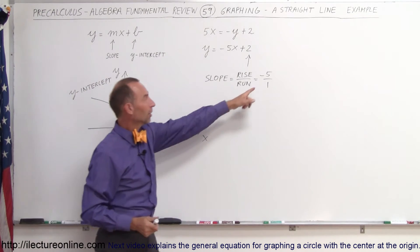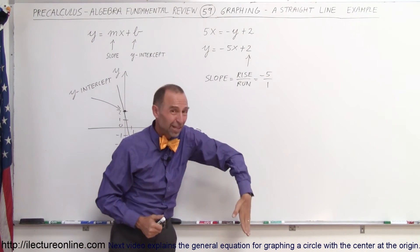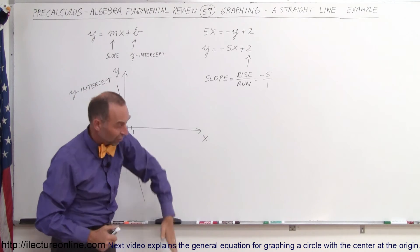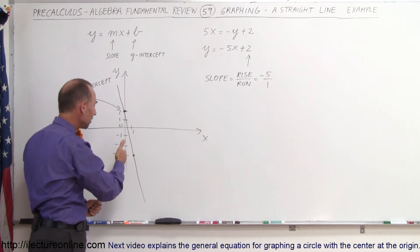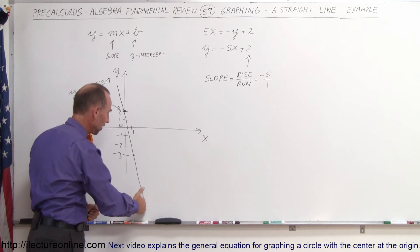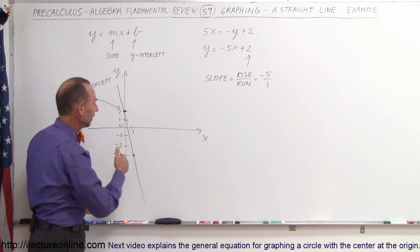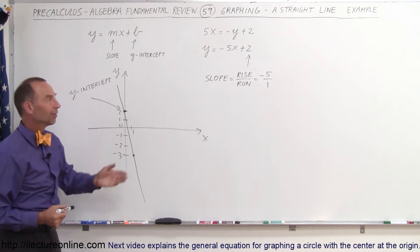Notice the number on the top is fairly large, that means it's a steep slope. Negative means it's sloping downward, and so you can see that this represents a drop of 5 and a run of 1, drop of 5, run of 1, drop of 5, run of 1, and that's how we graph straight lines.